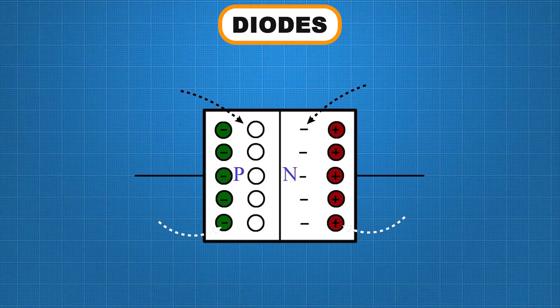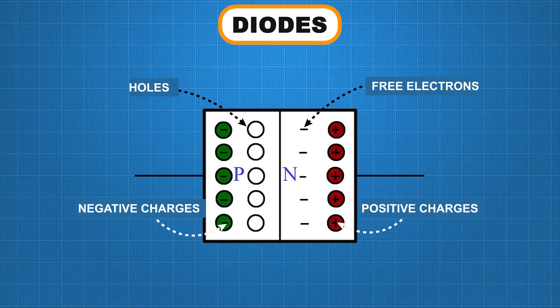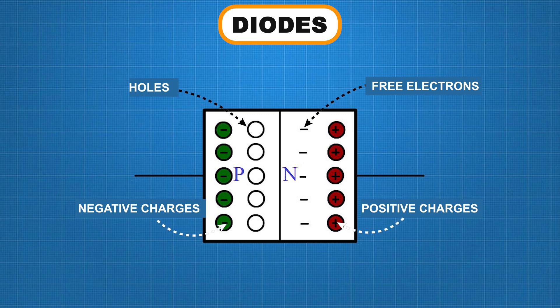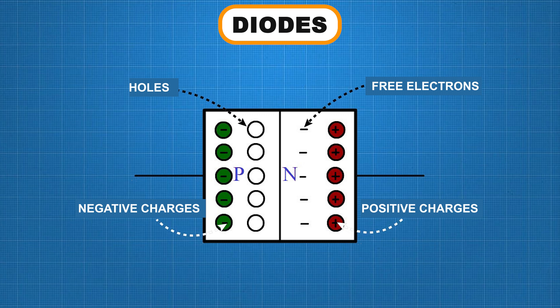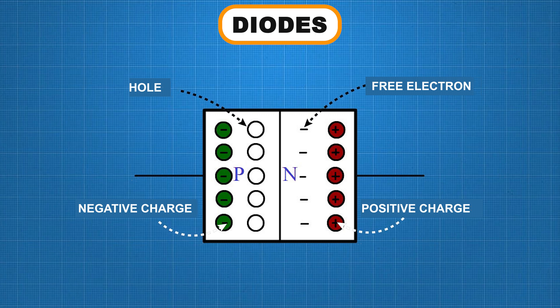The N-type material contains one extra electron while the P-type material has holes — essentially empty spaces waiting to be filled with electrons. This difference is what makes diodes so special.